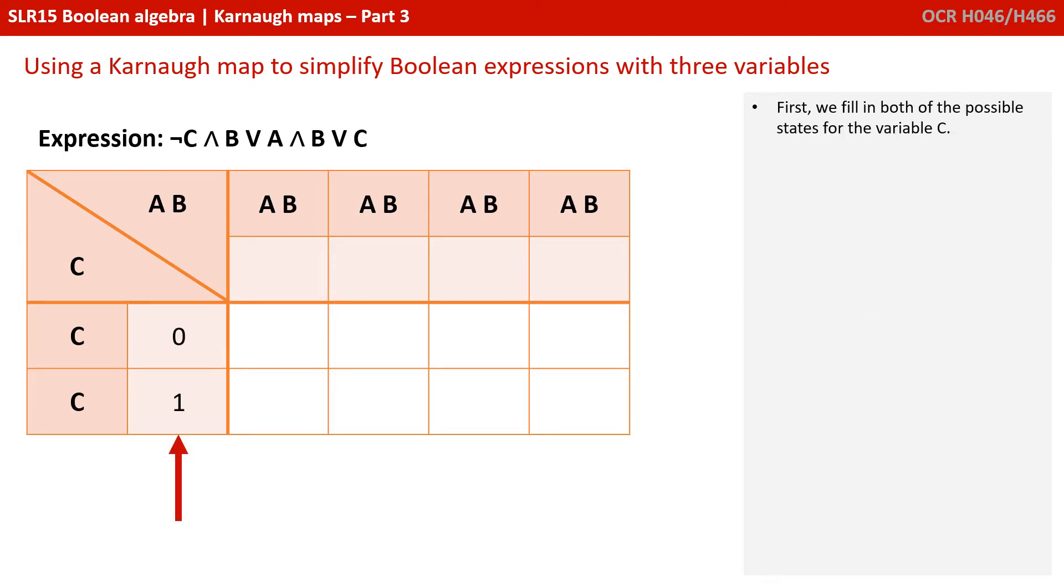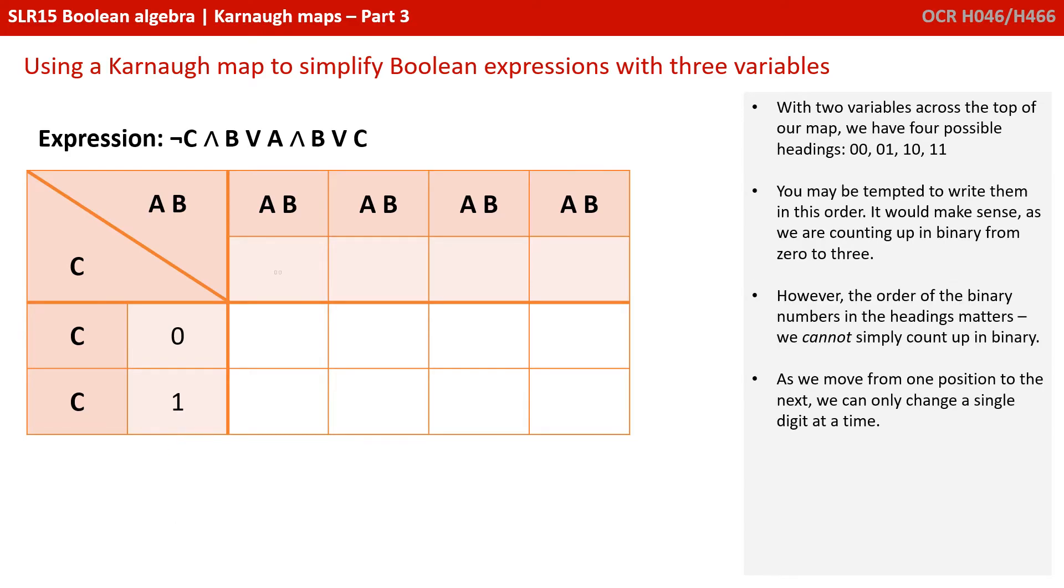First, we fill in both of the possible states for the variable C, so C can either be 0 or 1. With two variables across the top of our map, we have four possible headings: 0 0, 0 1, 1 0 and 1 1. And you may be tempted to write them in this order. It would make sense as we're counting up in binary from 0 to 3.